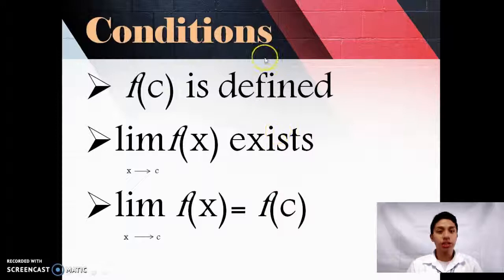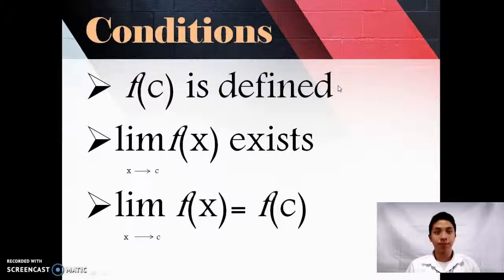There are three conditions that we need to consider. First, f(c) is defined. Second, the limit of f(x) as x approaches c exists. And lastly, limit of f(x) as x approaches c is equal to f(c).